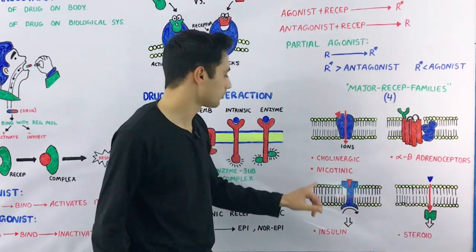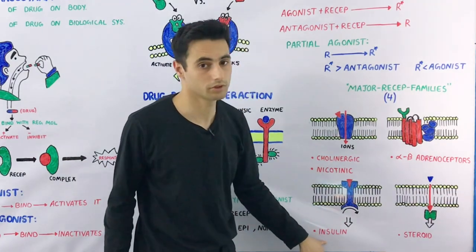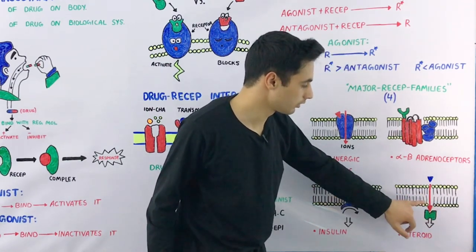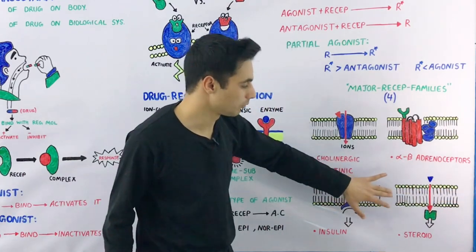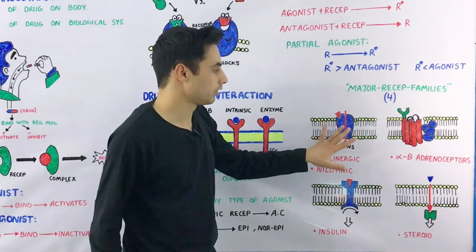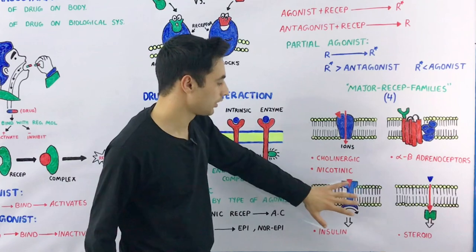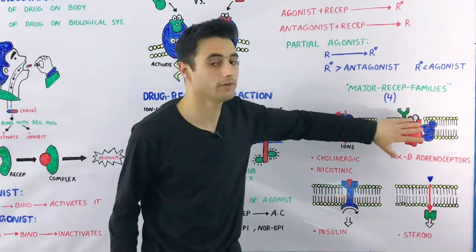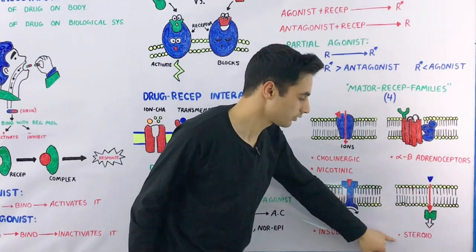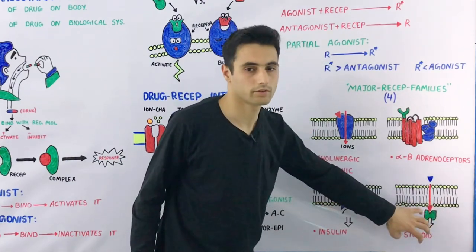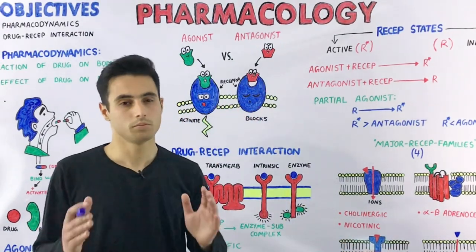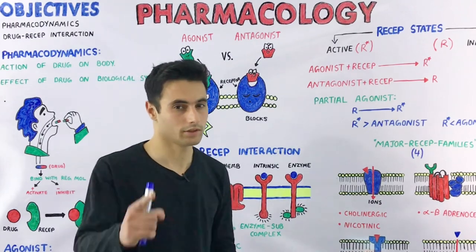Some other types of receptors perform their action with the help of intrinsic activity — these are the insulin receptors. Some receptors are present intracellularly, not extracellularly or on the cell membrane — these are the steroid receptors. The ion channel-linked, transmembrane, and intrinsic receptors are hydrophilic and present on the surface of the cell membrane, while the hydrophobic receptors, which are steroid in nature, are present inside the cell. This is all about pharmacodynamics and drug-receptor interaction.